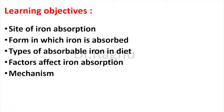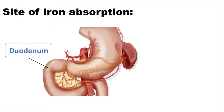By the end of this session we shall be learning: the site of iron absorption, the form in which iron is absorbed, the types of absorbable iron in the diet, the factors which affect iron absorption, as well as the mechanism of iron absorption. So let's first see the site of iron absorption.